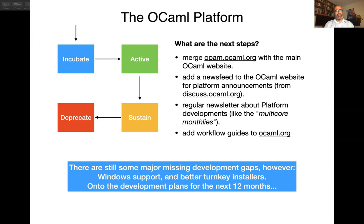Although we've covered a huge amount of development from the last 12 months, there are still major missing development gaps. The first is simply the lack of Windows support. Visual Studio Code is fantastic because the plugin takes care of individual tool installation for you, but the consistent blocker for anyone developing installers is that our Windows support simply isn't there yet. I'm going to cover high-level development plans for OPAM and various tools over the next 12 months.